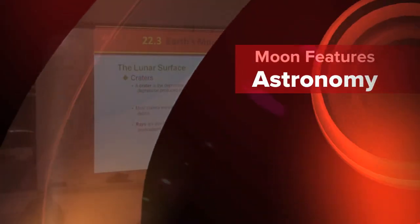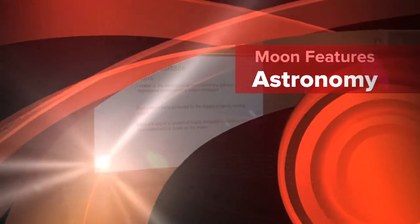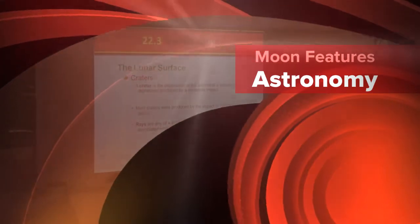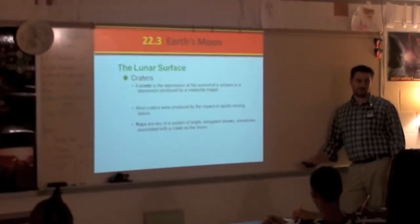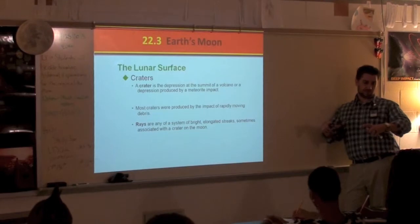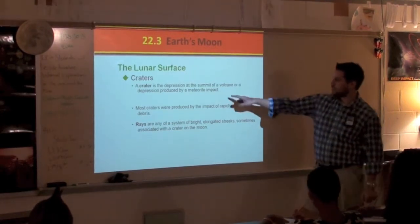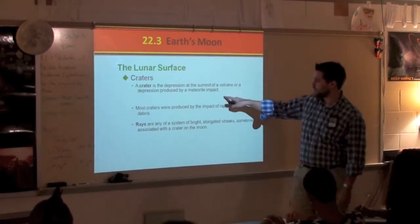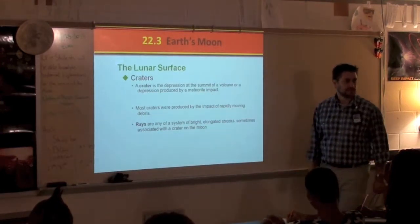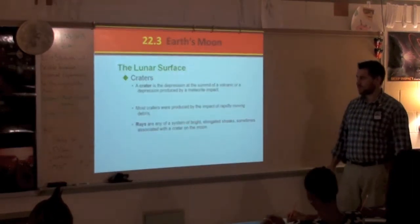There are craters on the moon. What is a crater? A hole in the ground — or where something hit the ground and made a circular-shaped impression, or a depression at the summit of a volcano or produced by a meteorite impact.